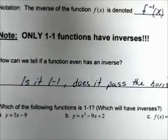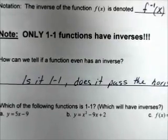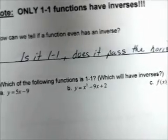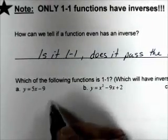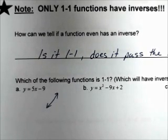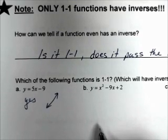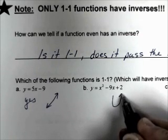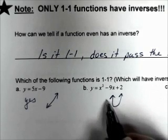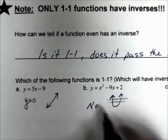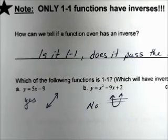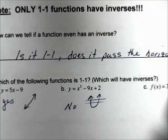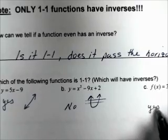Which of the following functions is one-to-one? The ones we determine are one-to-one will have inverses. y = 5x − 9: that's just a line, so yes, it's one-to-one and would have an inverse. y = x² − 9x + 2: that's a parabola concave up, it fails the horizontal line test, so no, it's not one-to-one and would not have an inverse. f(x) = 3 − 5x: also the graph of a line, so yes, it would have an inverse.